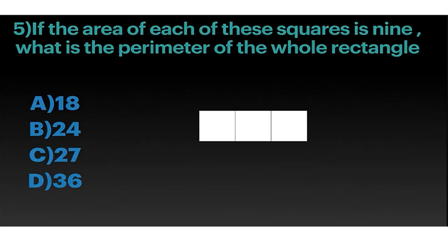The final of the five questions is, the area of each of these squares is 9. What is the perimeter of the whole rectangle? We have to find what times what can equal 9 for just 1 square. If we do 3 times 3, we would get 9.